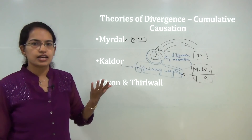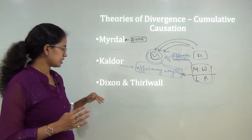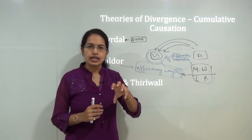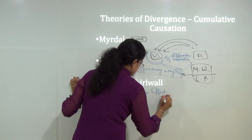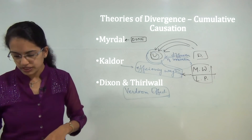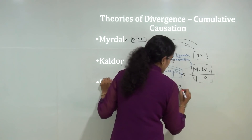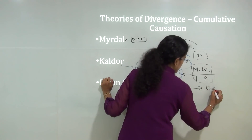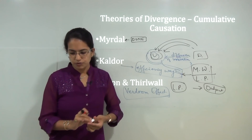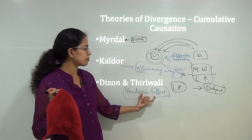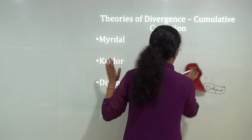Kaldor tried to explain that productivity is lower in industrialized regions mainly due to economies of scale. Finally, Dixon and Thirlwall propounded the Verdoorn effect. Under this effect, they explained that growth in labour productivity is partly dependent on growth in output — not solely, but partially. This was a modification of Myrdal's theory.